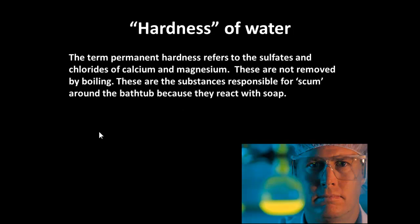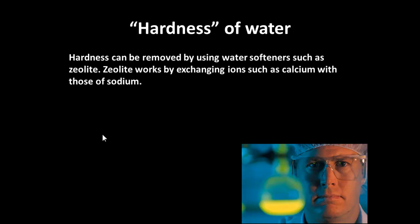The term permanent hardness is slightly different. That means you've got impurities of sulfates and chlorides of calcium and magnesium in the water. Those aren't removed by boiling, and those form the scum around a bathtub because they react with soap. You can remove hardness by using a water softener. Zeolite is a typical water softener that exchanges ions, so that calcium ions are replaced with those of sodium.